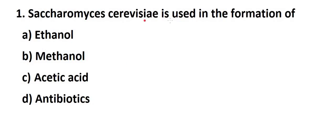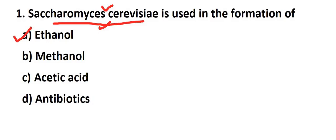Next question: Saccharomyces cerevisiae is used in the form of what? This is a yeast. This yeast is used in beverages like wine, and also in breads and baking. The product it makes is ethanol - alcohol. So option A, ethanol, is the right answer.